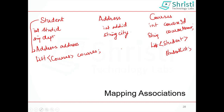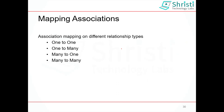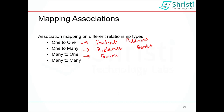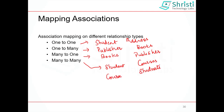The four main types of association mapping are: one-to-one, one-to-many, many-to-one, and many-to-many. In case of one-to-one, an example is one student having one instance of address. In case of one-to-many, one publisher publishing many books. In case of many-to-one, many books published by one publisher. In case of many-to-many, one student taking many courses and one course taken by many students. These are the four different types of association.